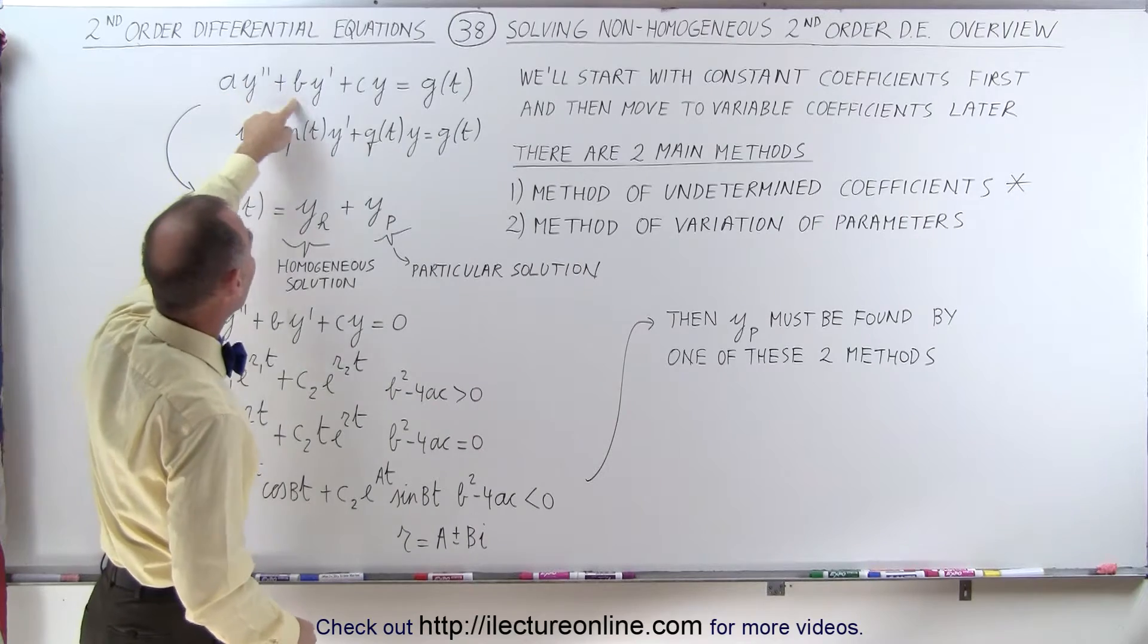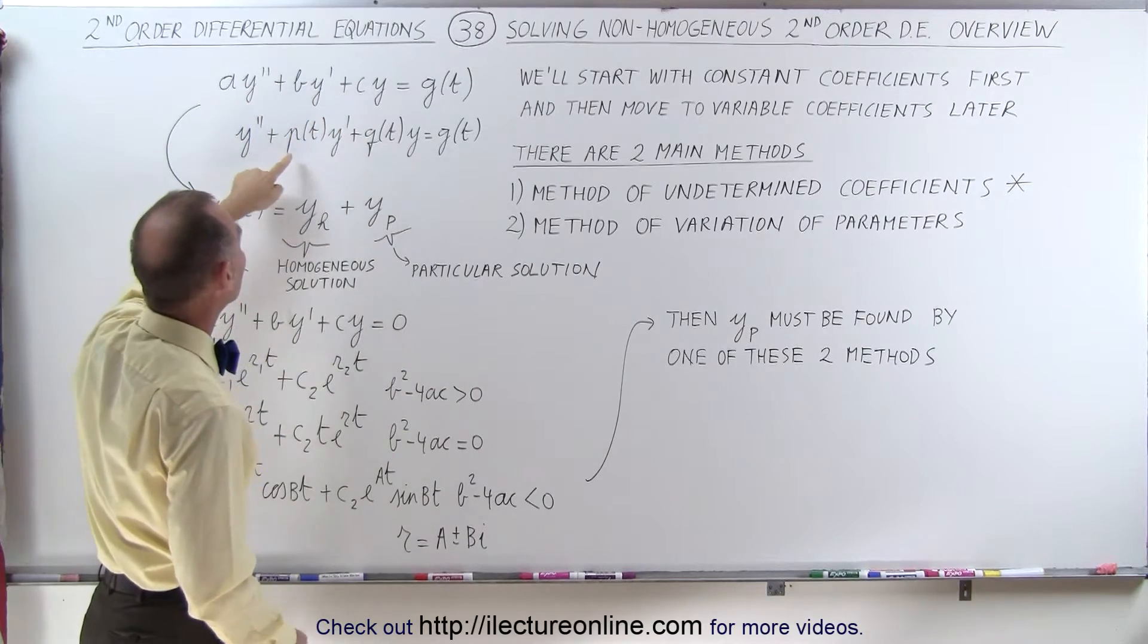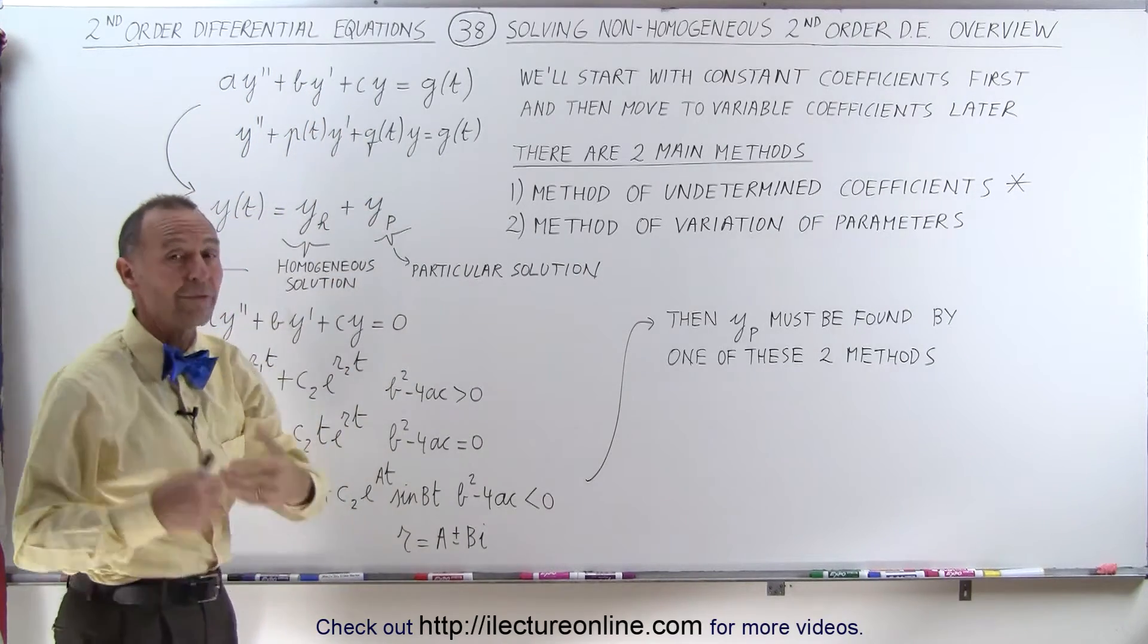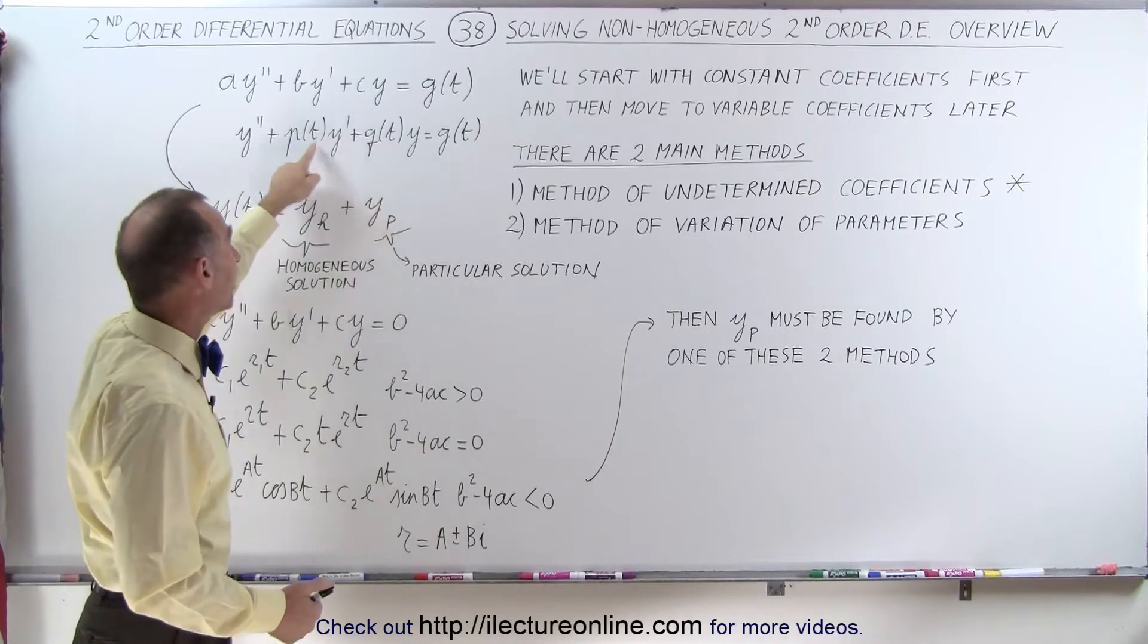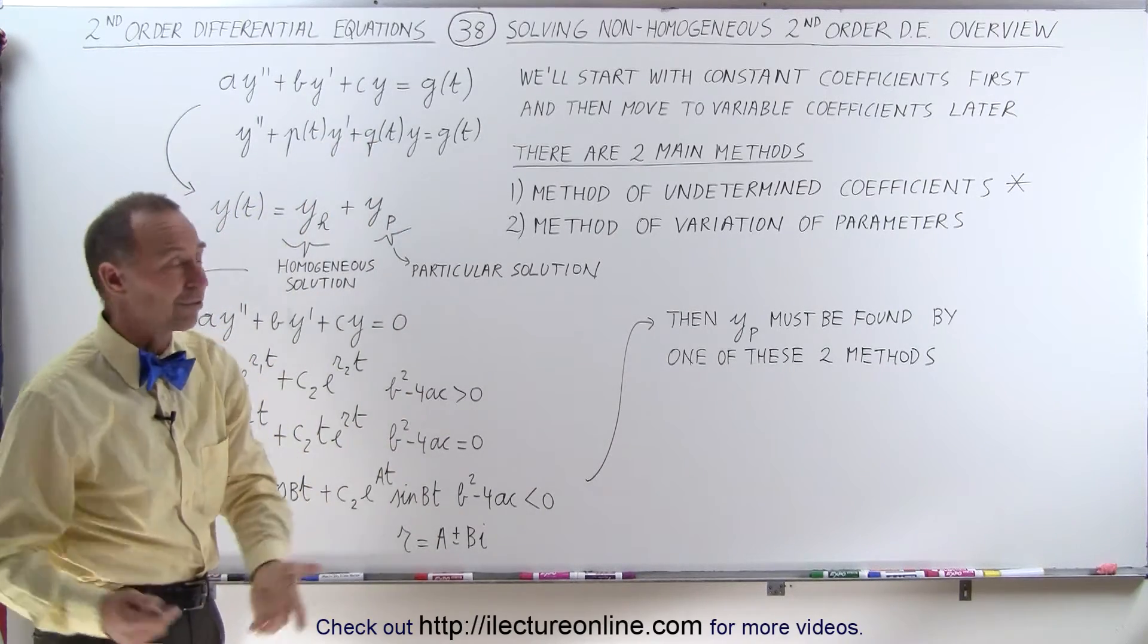That function either has constant coefficients or has non-constant coefficients, where the coefficients are functions of the variable to begin with. In this case, we'll let the variable be t for time.